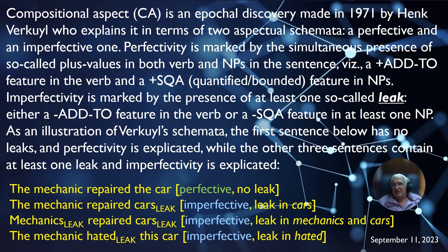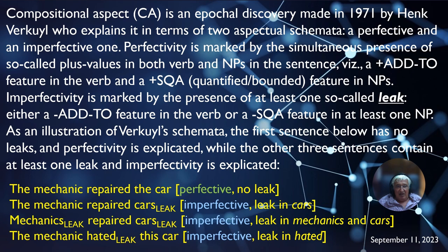Compositional aspect is an epochal discovery made in 1971 by Henk Verkerk, who explains it in terms of two aspectual schemata: a perfective and an imperfective one. Perfectivity is marked by the simultaneous presence of plus values in both verb and nominal phrases — a plus 'add-to' feature in the verb and a plus SQA (specified quantity of A, also called quantified or bounded) feature in NPs. Imperfectivity is marked by the presence of at least one so-called leak: either a minus 'add-to' feature in the verb or a minus SQA feature in at least one NP.